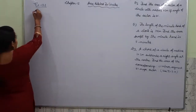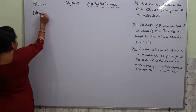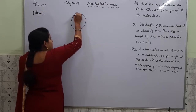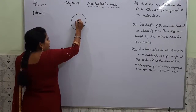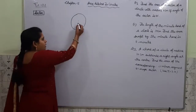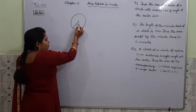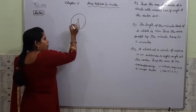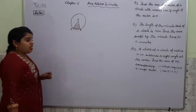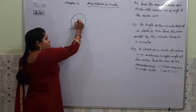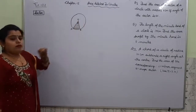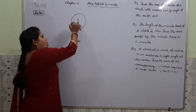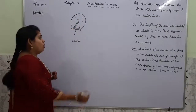First of all, we will talk about sector. What do you mean by sector? Suppose a sector is given with its centre. The area between two radii is called a sector. Let the centre be O, and AOB is a sector. The angle between these two radii is theta. So, AOB will represent the sector. It is also the area between two consecutive radii, so it will again be a sector.